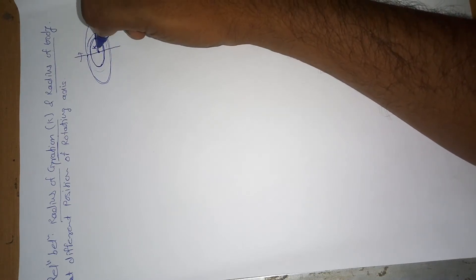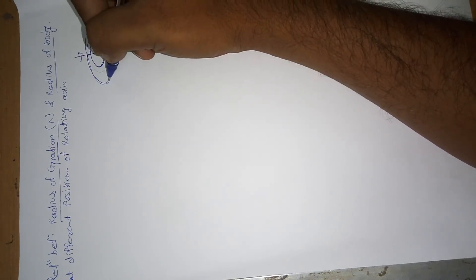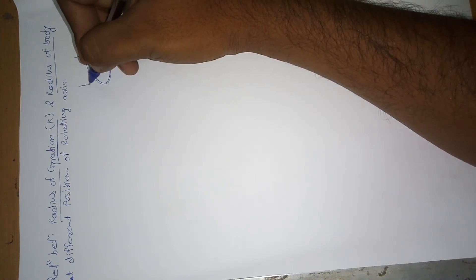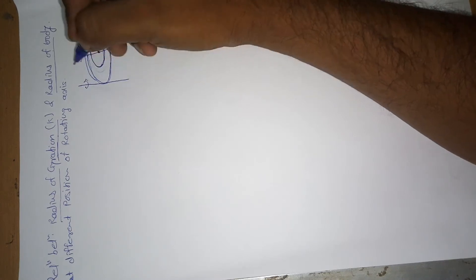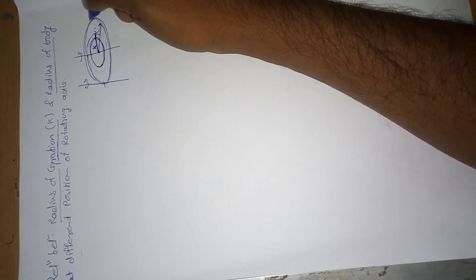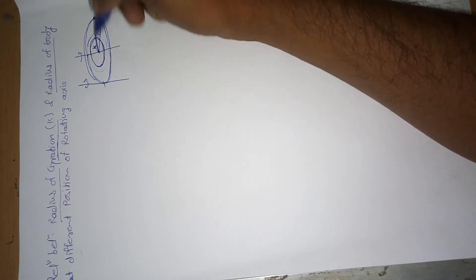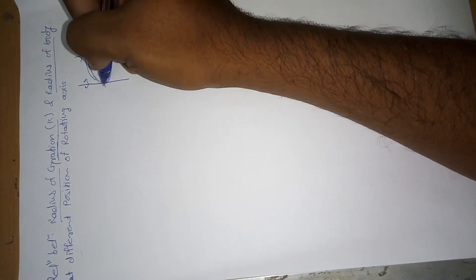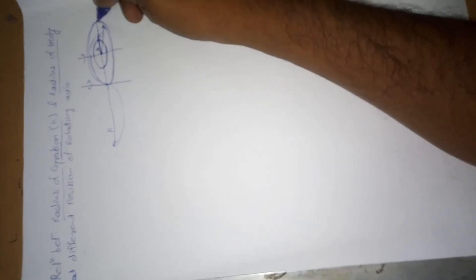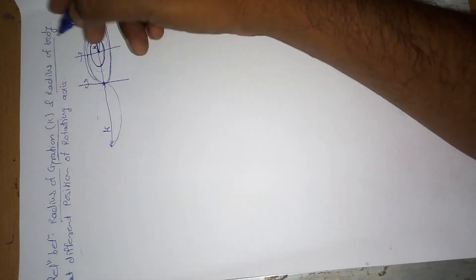The radius of gyration is related to the radius of the body. This is a small perfectly spherical body. The relation involves the small distance from the rotating axis. At a different position of the rotating axis, this small body — the mass particle — and the point of concentration give us the distance, which is the radius of gyration.